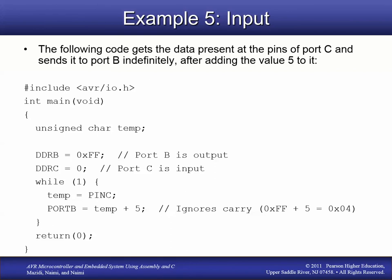Now, what if we want to read data into the microcontroller? In this example, we get data from the pins of Port C and manipulate it, then send it out to Port B. Port C pins are configured as inputs and Port B pins as outputs. The first two lines handle this: ones written to DDRB make all Port B pins outputs, and zeros written to DDRC make all Port C pins inputs.